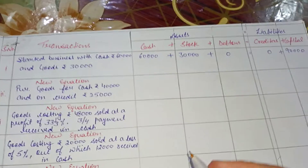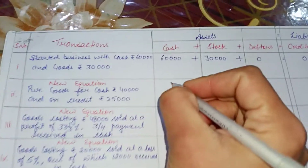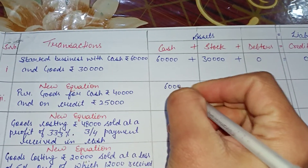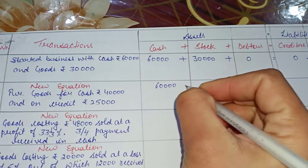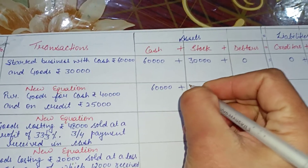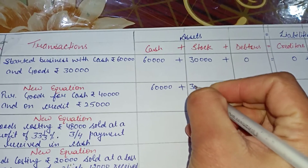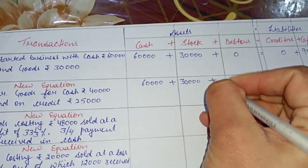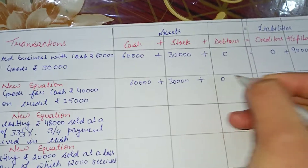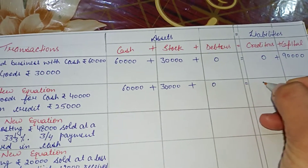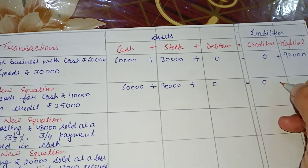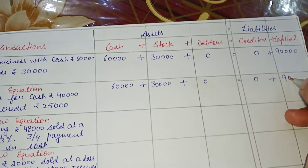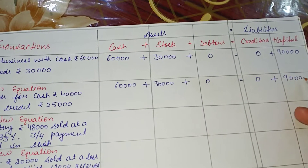So with our new question: cash is 60,000 rupees, plus stock 30,000, plus debtors 0, which is equal to creditors 0, plus capital 90,000.